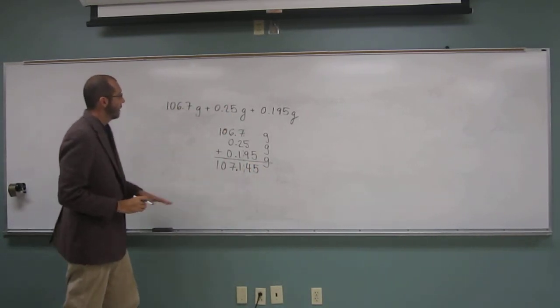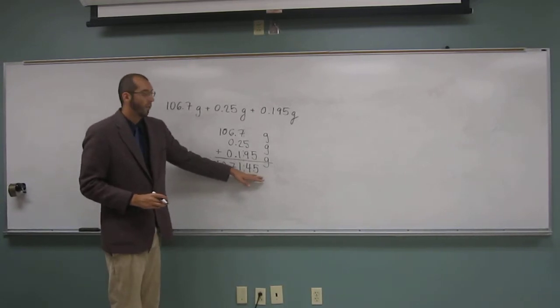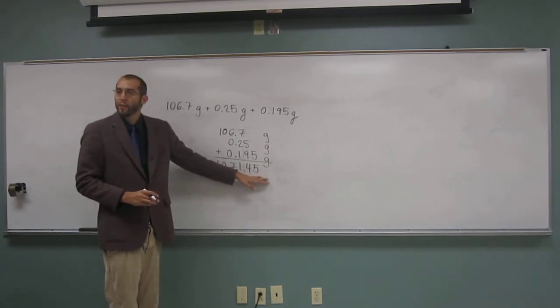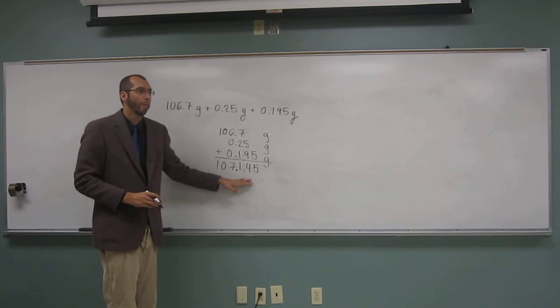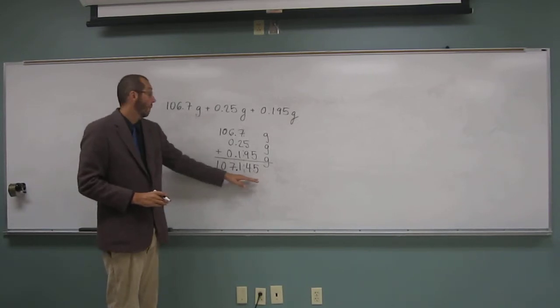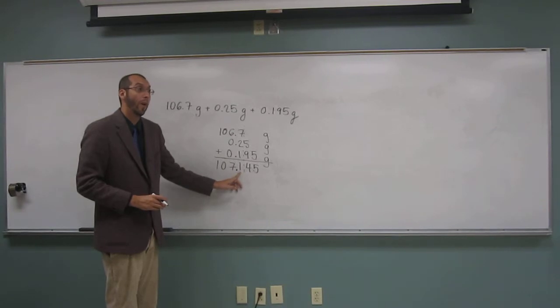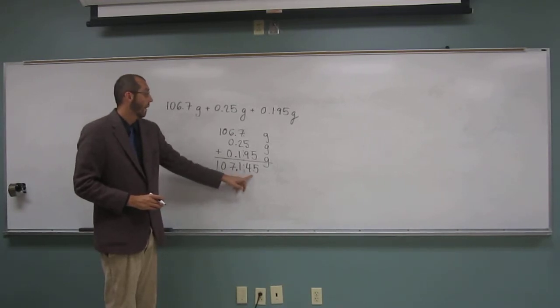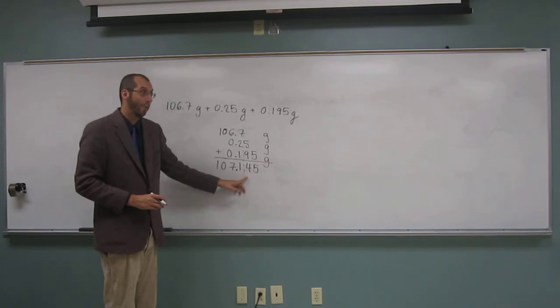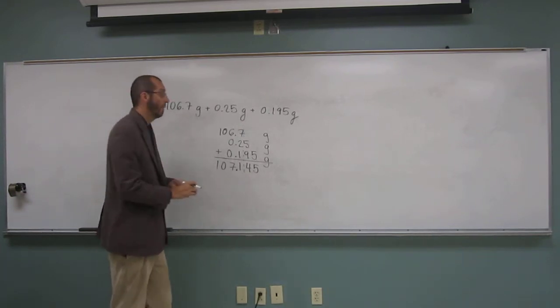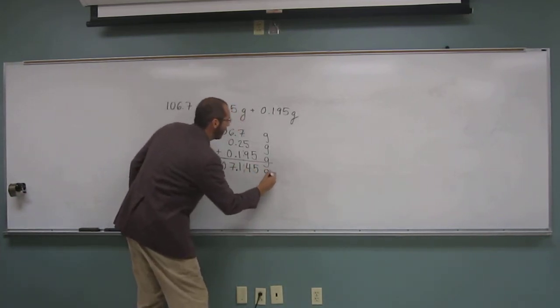Okay, so do we keep this 4, 5 in this answer? Do you guys remember? We can round it. Well, yeah, we're going to round. So are we going to keep that 4, 5 or are we going to round that 1, right? Yeah. Okay, so are we going to round that 1 down or up in this case? Down. Down, right, because 4 is below 5. And we've got to remember our units.